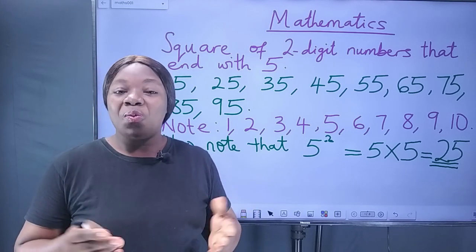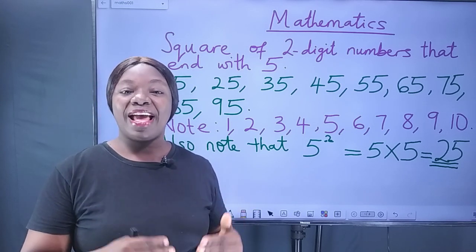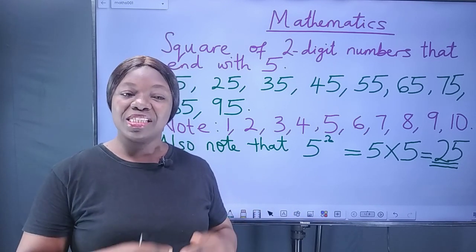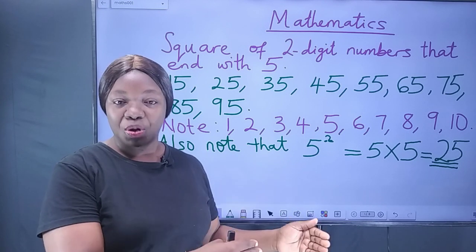For example, what is the square of a cat? It means cat times cat. What is the square of a dog? It means dog times dog.